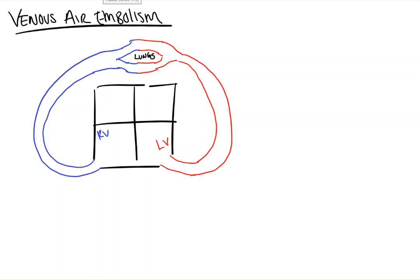Hi everyone. On this video from Count Backwards from 10, we're going to take a look at venous air embolisms — what causes them and what we can do about it when we see them in the operating room.